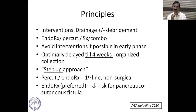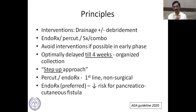The principles of intervention involve drainage with or without debridement, using endotherapy, percutaneous therapy, surgery (minimally invasive or invasive), or a combination. Interventions should be avoided in the early phase; optimally delayed until four weeks when the collection becomes more organized. The step-up approach starts with first-line non-surgical approaches — percutaneous or endoscopic therapy. Endotherapy is preferred over percutaneous because there is less risk for pancreatic or cutaneous fistula.